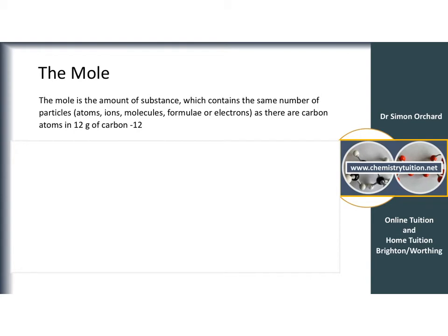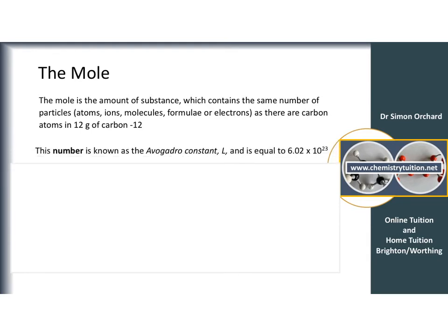The mole is defined as the amount of a substance which contains the same number of particles as there are carbon atoms in 12 grams of carbon-12. In 12 grams of carbon-12, there are 6.02×10²³ atoms. So I can have a mole of anything: a mole of silicon atoms means 6.02×10²³ silicon atoms; a mole of Mars bars would be 6.02×10²³ Mars bars. It works for atoms because they are so small and we need that number to work in reasonable quantities.